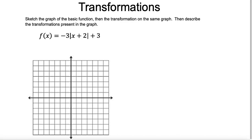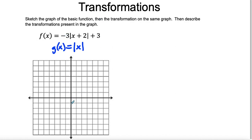Let's look at graphing transformations. The first thing you want to do whenever you have a function that you need to graph is you want to identify the basic function. You can see clearly by these two lines that the basic function here is absolute value of x. So we're going to have absolute value of x, and I'm going to go ahead and graph that here in blue.